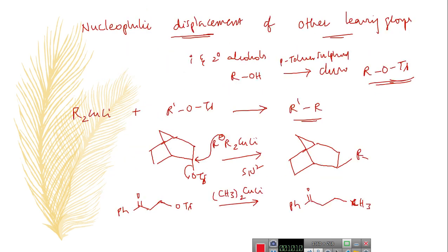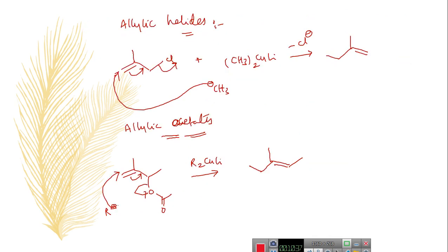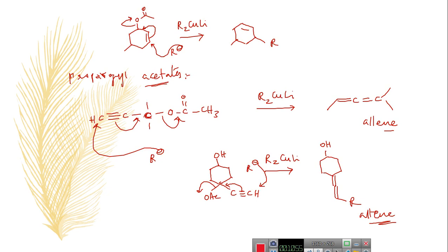In the case of nucleophilic displacement of other leaving groups, we discussed the reaction of organolithium cuprates with tosylates. Since tosylates are good leaving groups, the weaker nucleophile also reacts with them, and the nucleophilic displacement gives hydrocarbons. You can also treat Gilman's reagent with allylic halides and allylic acetates — since they are good leaving groups, Gilman's reagent involves an SN2' reaction and gives allylic rearranged products. You can also treat with propargyl acetates, where this reaction produces allylic products as the major product.